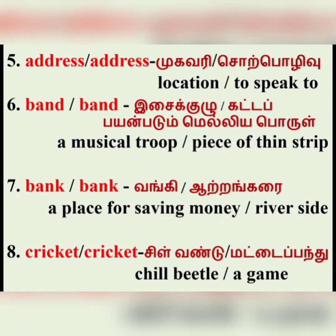Next, 'address.' One address refers to a place — the place we reside or the identity of a place. And the next usage is to address a gathering, meaning to speak to someone. Then 'band' — a troop of singers with musical instruments is a band. And the other band is a strip or string used to tie something, for example a hair band.